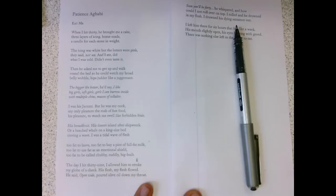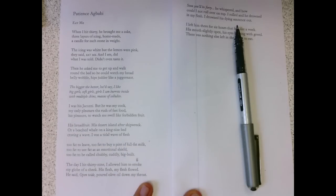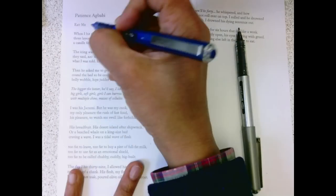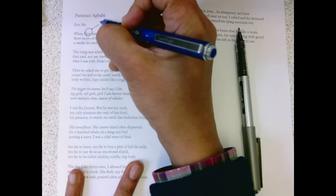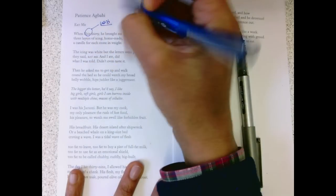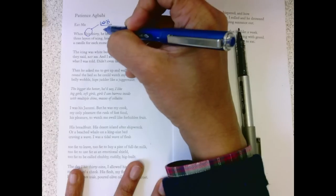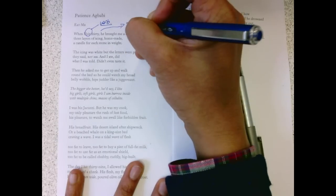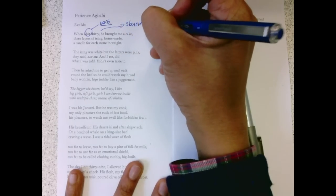When I hit 30, he bought me a cake, three layers of icing, homemade, a candle for each stone in weight. Perfect. I think verbs are really important. Hitting 30 is something, she's almost slamming into her age.